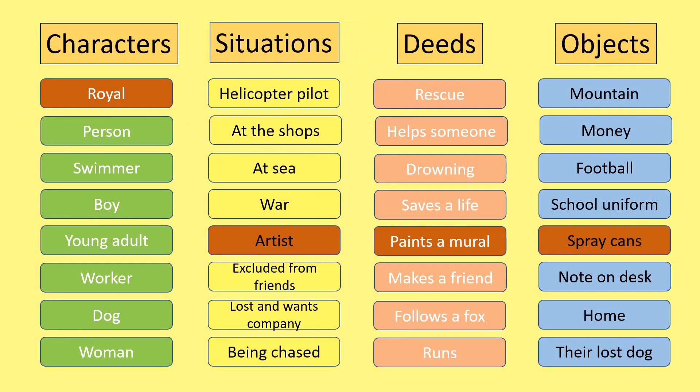So what you'd expect from a member of the royal family might be that they're a helicopter pilot who rescues people from mountains, like Prince William. But instead, what Nicky did was make them an artist — a graffiti artist who paints a mural in the city using spray cans. This is completely unexpected.